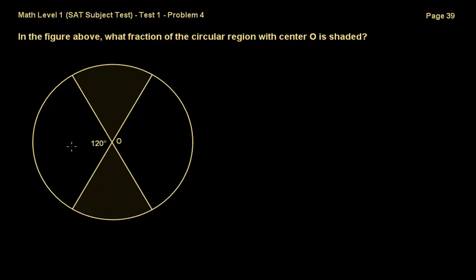As you can see, I have a circle right here, and this is a shaded region over here. We have an angle of 120 degrees. So in order to solve this, first I'm just going to notice a couple of things.